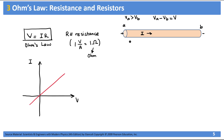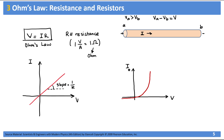Even though Ohm's law covers quite a lot of devices and materials, such as metals and conductors, many semiconductor devices — for example, diodes and transistors — do not obey Ohm's law. The IV graph for a diode looks non-linear. So we call the devices that obey Ohm's law Ohmic devices, and devices such as the diode that do not obey Ohm's law we call non-Ohmic devices. During the remainder of this course, we will only deal with Ohmic devices.